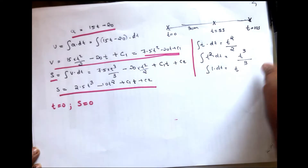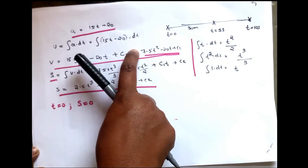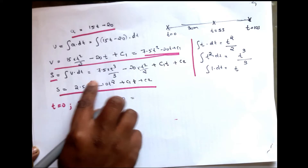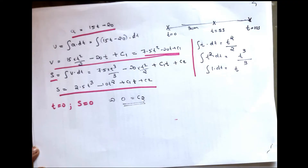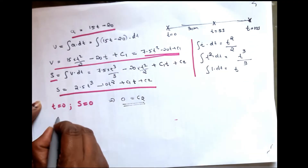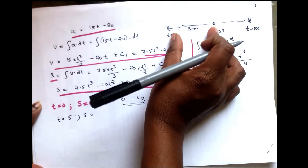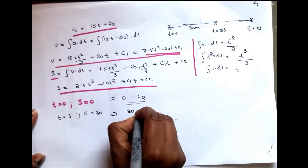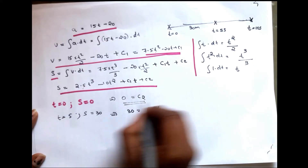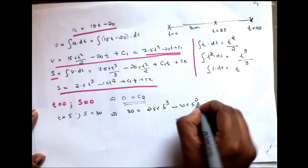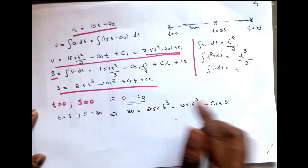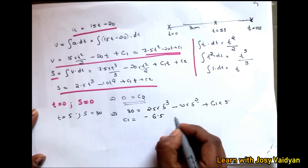When t equals 0, substituting into the displacement equation gives C2 equal to 0. Then substituting t equal to 5 seconds and s equal to 30 meters, we get: 30 equals 2.5 into 5³ divided by 3, minus 10 into 5², plus C1 into 5. Solving this equation gives C1 equal to minus 6.5.